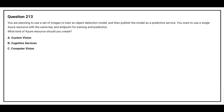Question number 213. You are planning to use a set of images to train an object detection model and then publish the model as a predictive service. You want to use a single Azure resource with the same key and endpoint for training and prediction. What kind of Azure resource should you create? Option A: Custom Vision. Option B: Cognitive Services. Option C: Computer Vision. The correct answer is Option B, Cognitive Services.